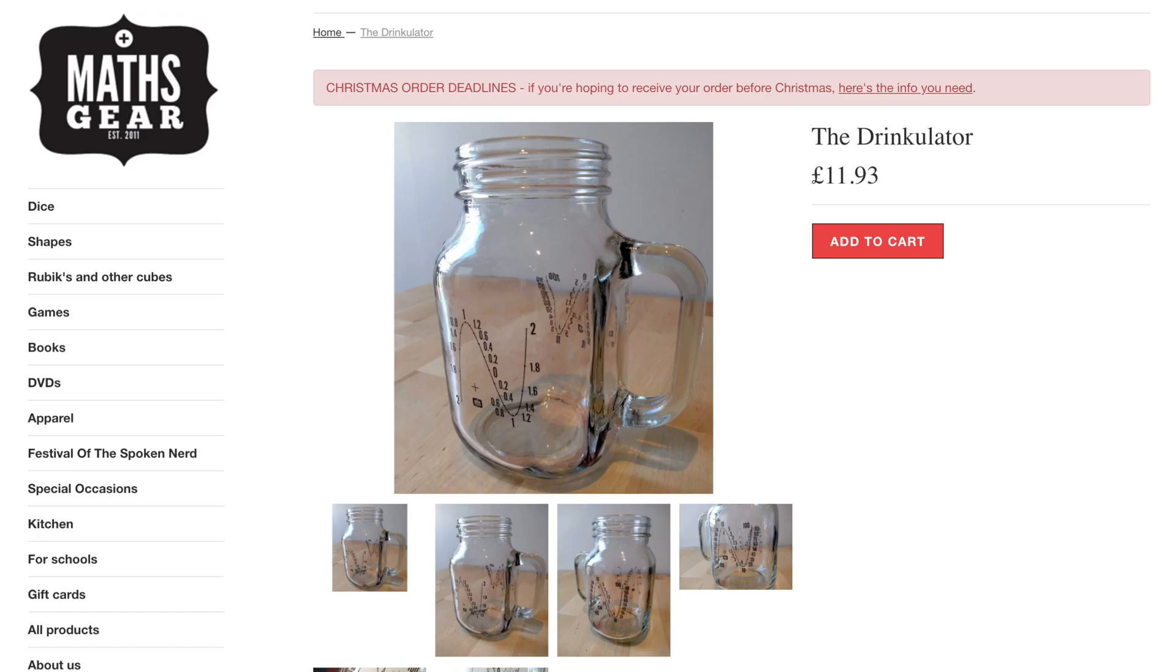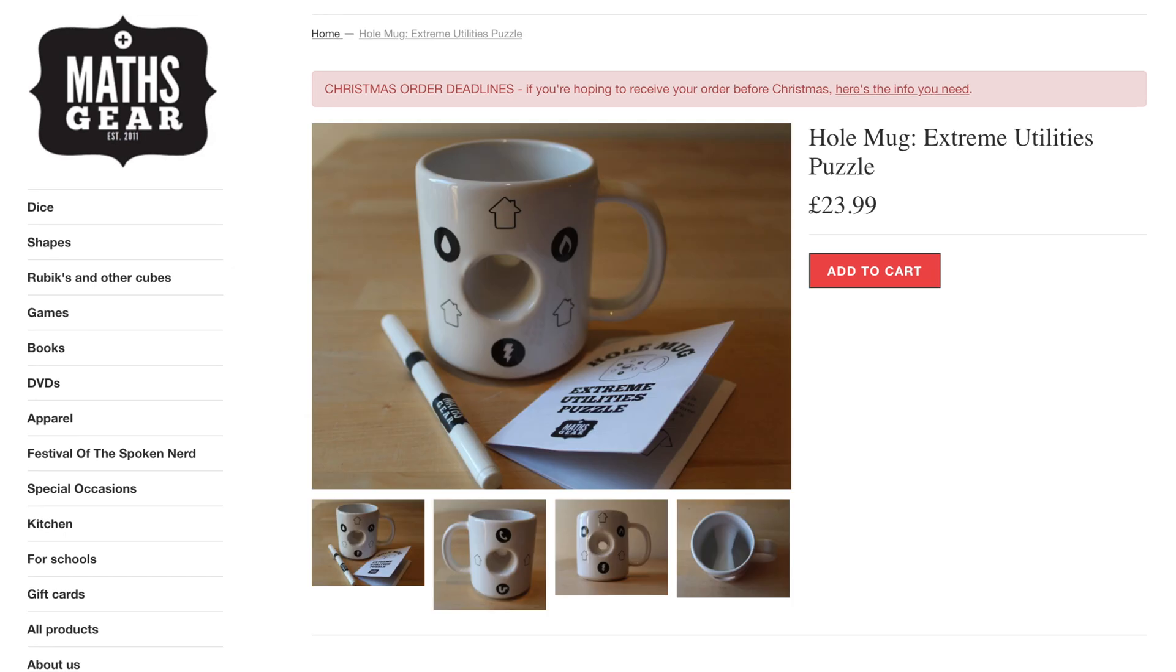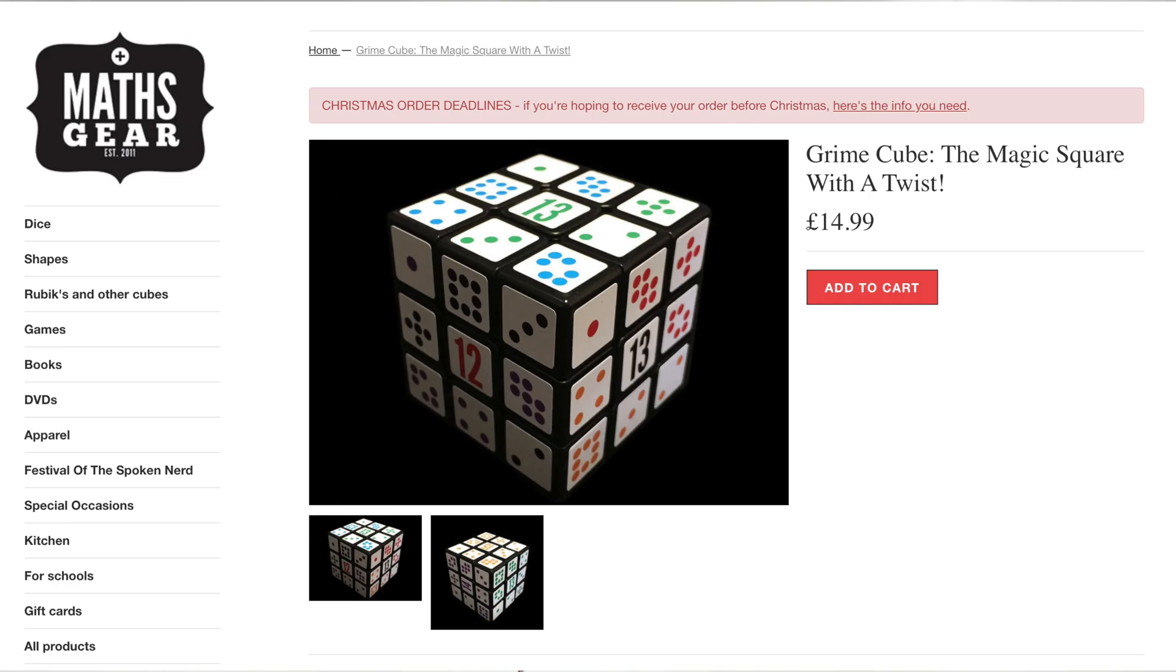We've got the Drinkulator and we've got the mug with a hole in it. I think James Grime has been involved in all of these things. In fact, James and I sat down, I don't know if they're out yet, but we've filmed videos for mug with a hole and the Grime Cube.